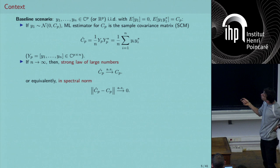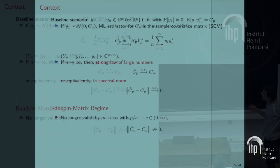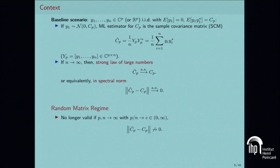Random matrix theory starts with the observation that 'n going to infinity' means more than just n much greater than 1 — it actually means n must be much greater than p, the dimension of the samples. Because if instead you ask p and n to go to infinity together, such that p is of the same order of magnitude as n — p/n converges to a constant c that is not zero — then this is not true anymore.